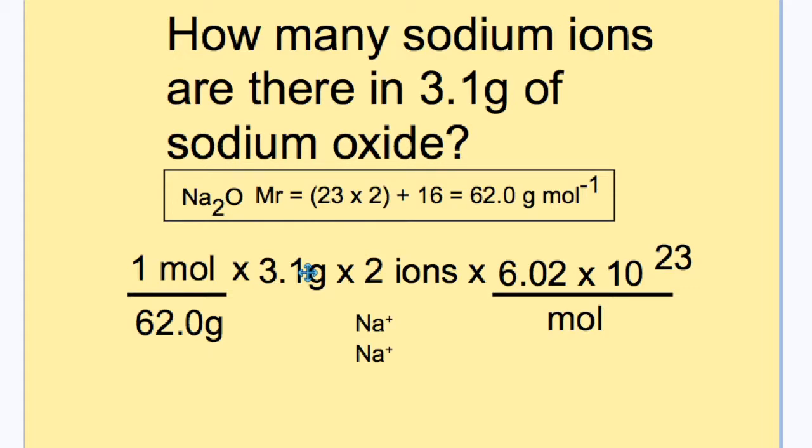Which is the actual amount of mass that we have, multiplied by the 2 ions for the 2 sodium ions, and all of this multiplied by 6.02 by 10 to the power of 23, the total number that makes up 1 mole, the Avogadro's number.